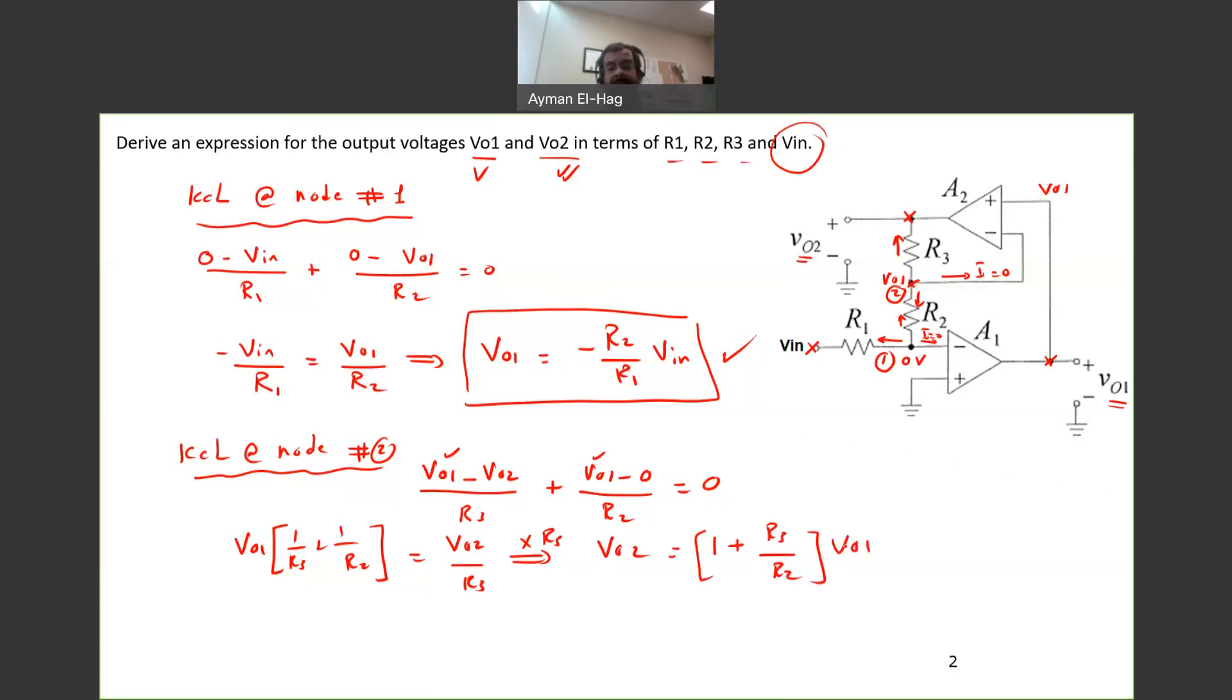Are we done? Of course not. But why? Because now we have VO2 in terms, yes, of the resistors R3 and R2, which are part of the variables, but it's also in terms of VO1. And I don't want that VO2 to be in terms of VO1, but in terms of Vn.